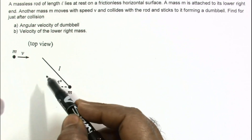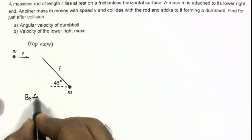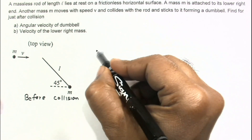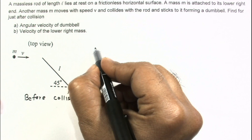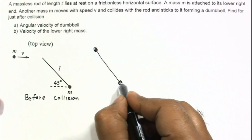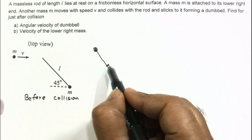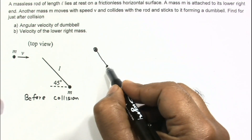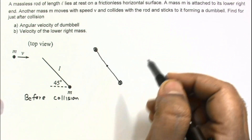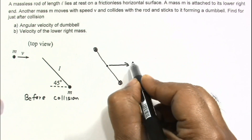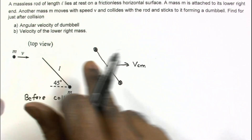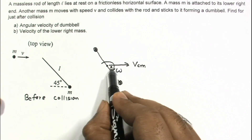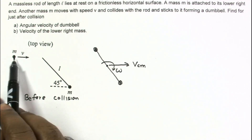Taking this as the initial situation before collision, let us draw the diagram for just after the collision. This mass is stuck here and this mass is here, and this is the center of mass of the complete system. Since the rod has no mass and each end has mass M, the center of mass will be at the midpoint — L/2 from each end. Assuming the velocity of center of mass is VCM, and since only horizontal momentum exists initially, omega will be clockwise.